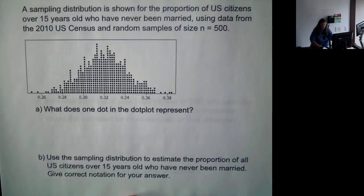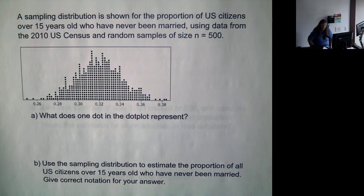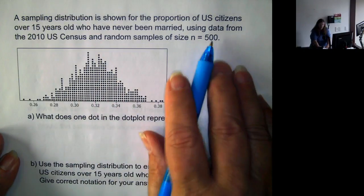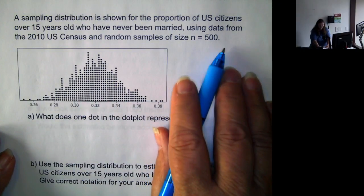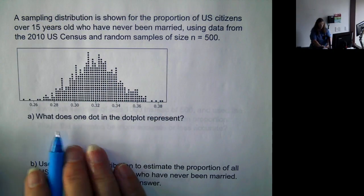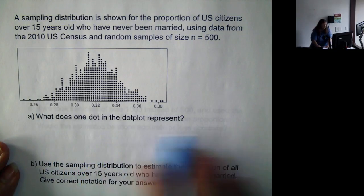Now let's move on. We have a sampling distribution shown for the proportion of U.S. citizens over 15 years old who have never been married, using data from the 2010 U.S. Census and random samples of size 50. So what does one dot in the dot plot represent?